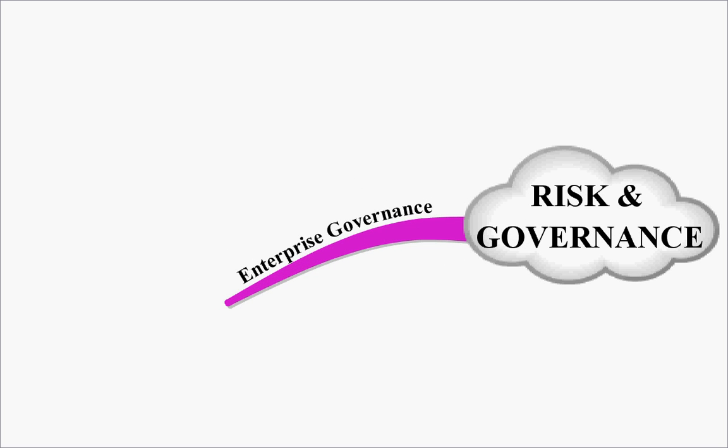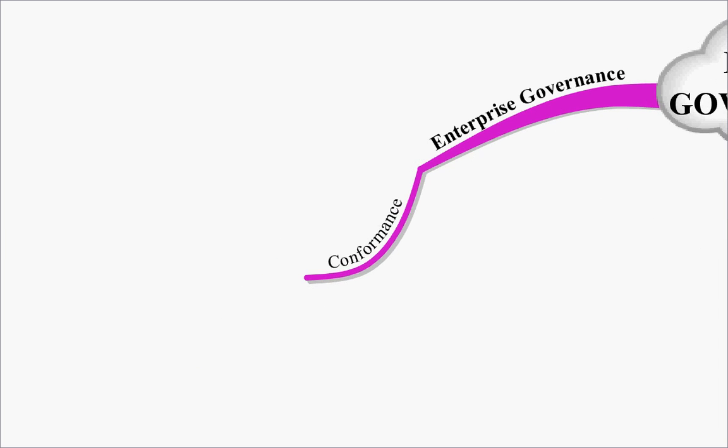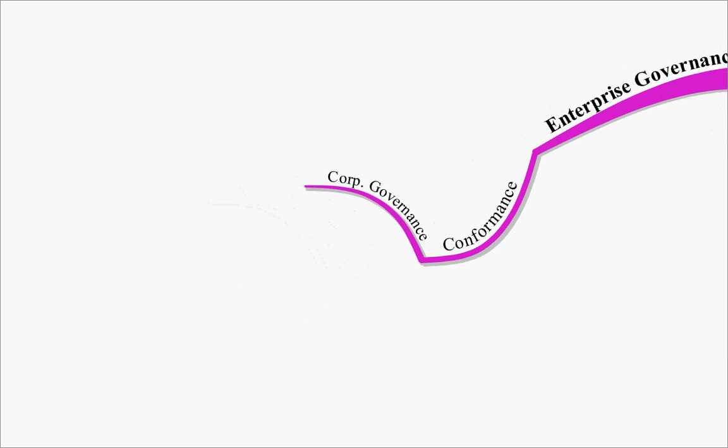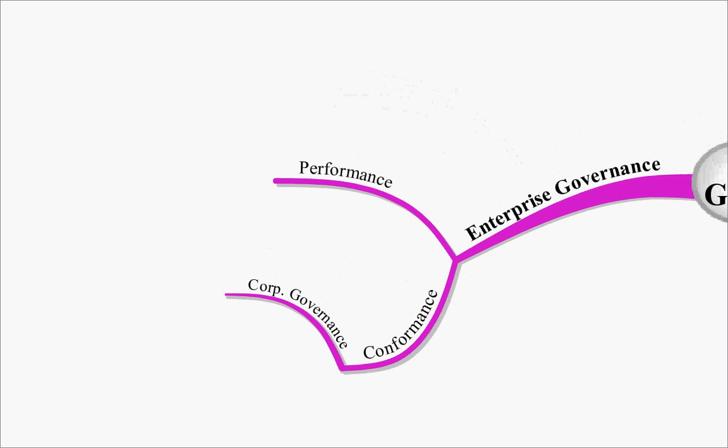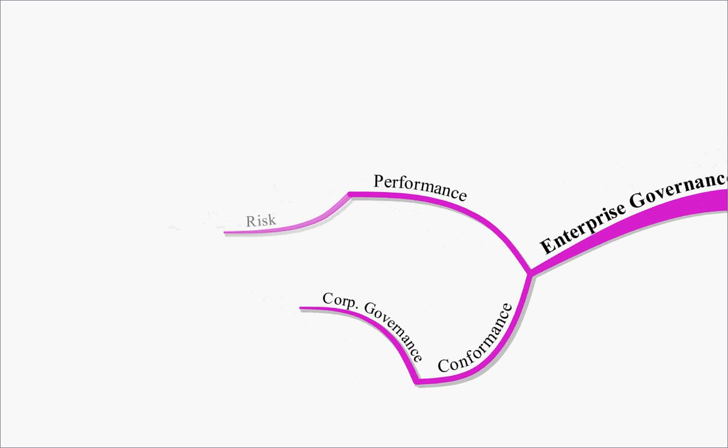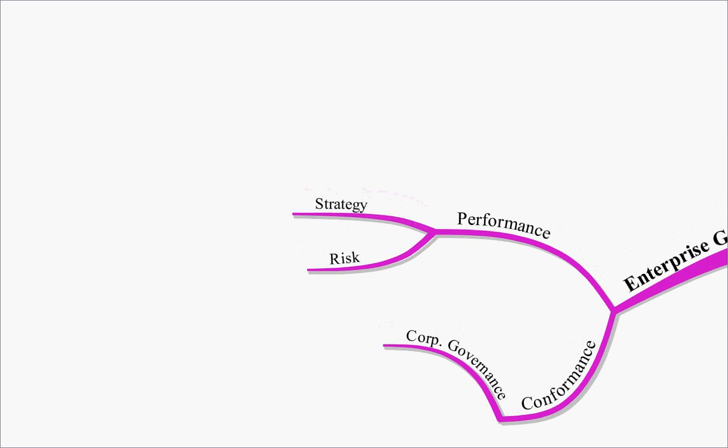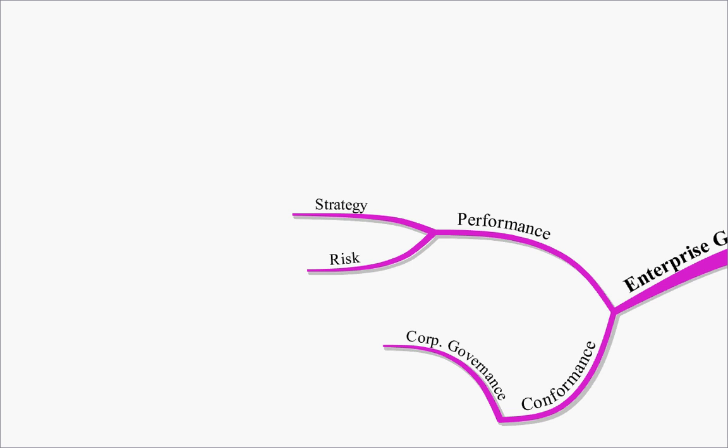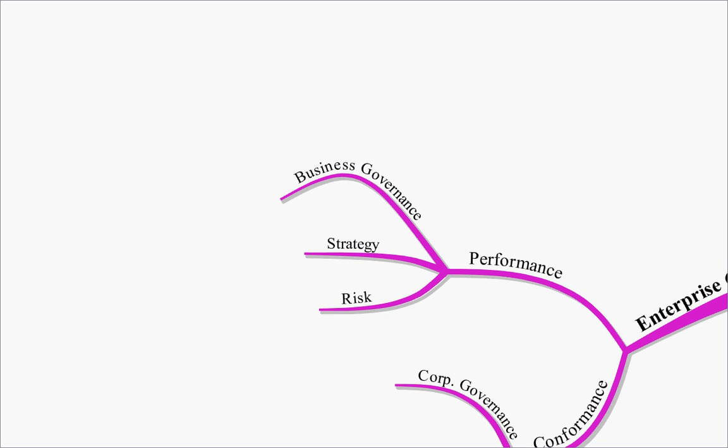The first thing we looked at was Enterprise Governance. How are we governing our enterprise? We looked at conformance - how are we covering corporate governance requirements? We looked at performance - how are we covering risks? Have we got a good strategy in place? And what about our business governance?